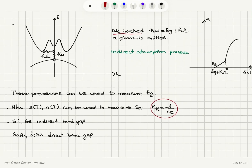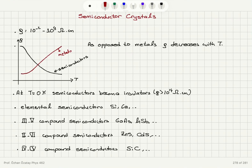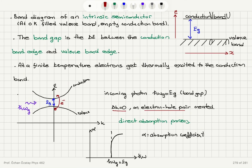In summary: semiconductor crystals have resistivity greater than metals but less than insulators. Resistivity versus temperature has a distinct behavior — resistivity decreases with increasing temperature. We have elemental, three-five, two-six, and four-four compound semiconductors. At 0 Kelvin they are all insulators. If the semiconductor does not have impurities it's called an intrinsic semiconductor, and the energy band diagram can be plotted in direct space by looking at the conduction band edge and valence band edge. At a finite temperature, electrons get excited from one band edge to the other, creating electron-hole pairs that lead to conduction.